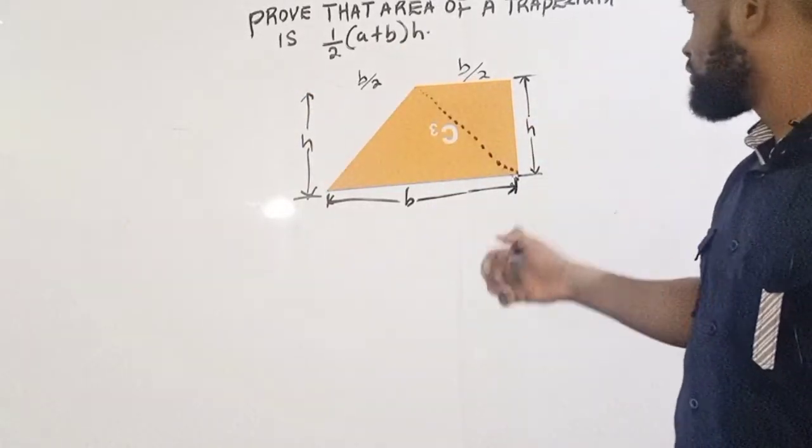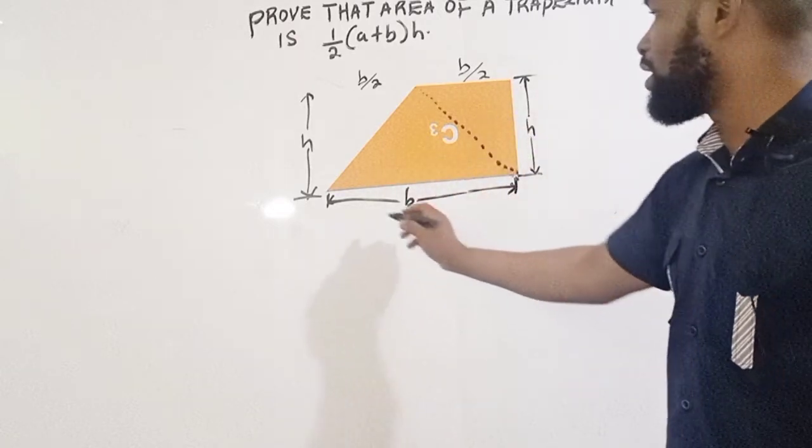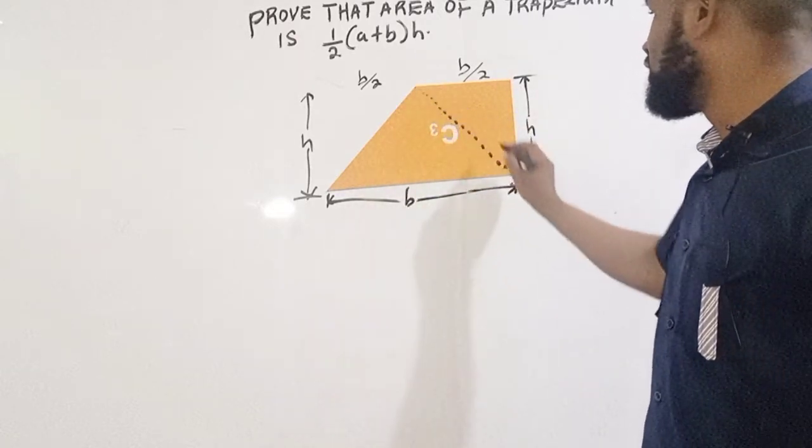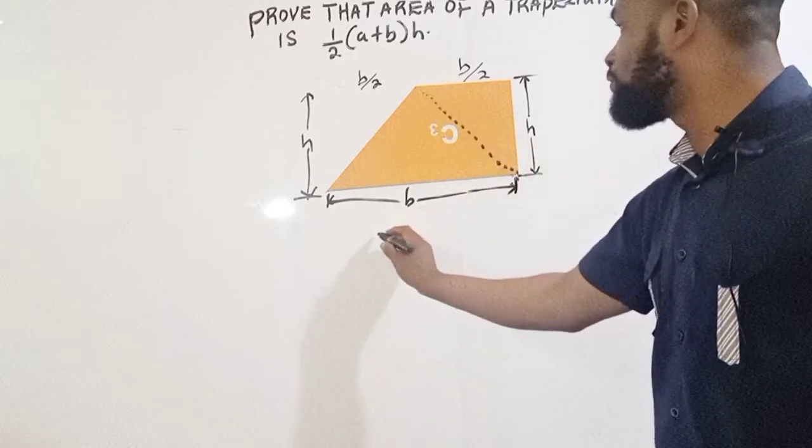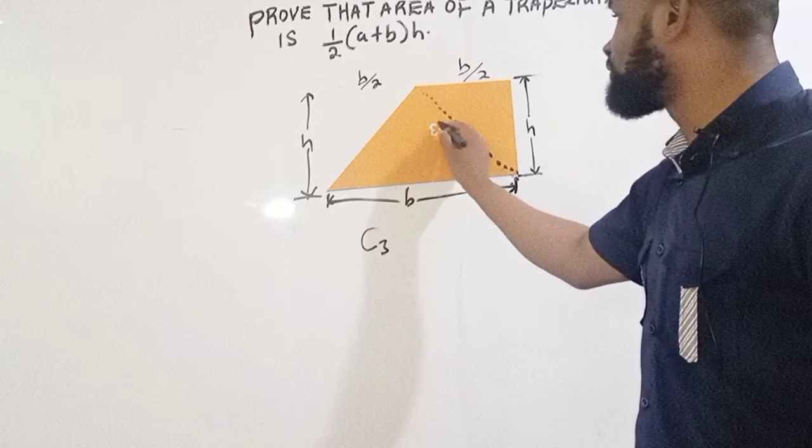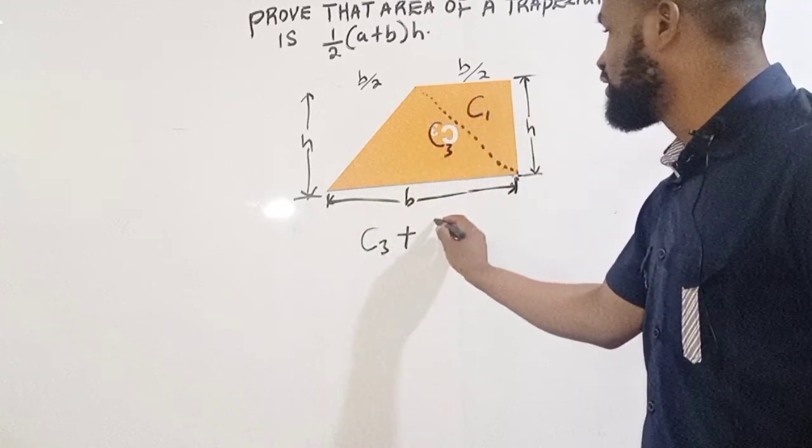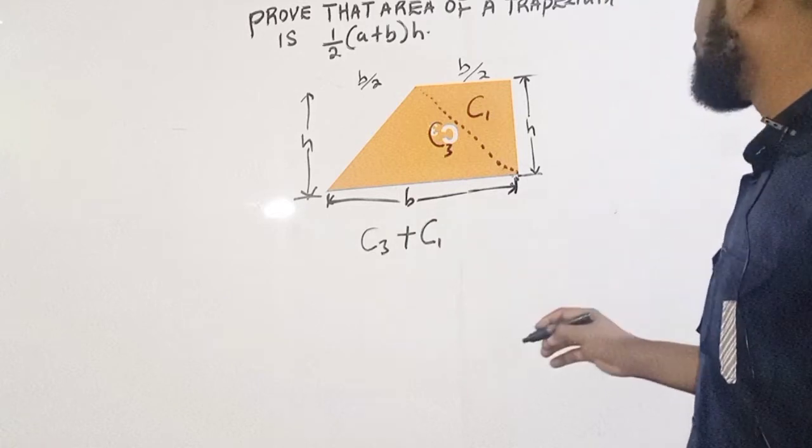I take this away. So when I take this away, I have this and this. Remember, for this side, this shape, we have two shapes: C3, this is C3, and this is C1. C1 plus C3.